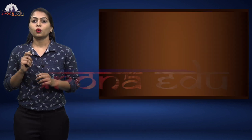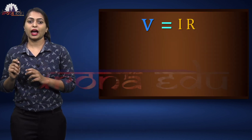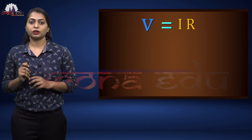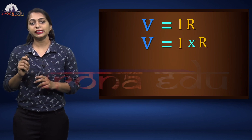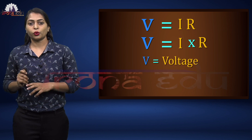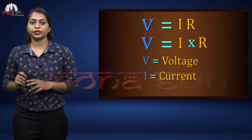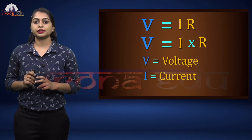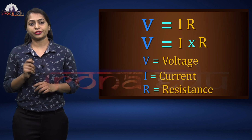We can equate the two by bringing in a constant of proportionality R. So V is equal to IR, where V is voltage, I is current, and R is resistance. R is called the resistance of the wire.